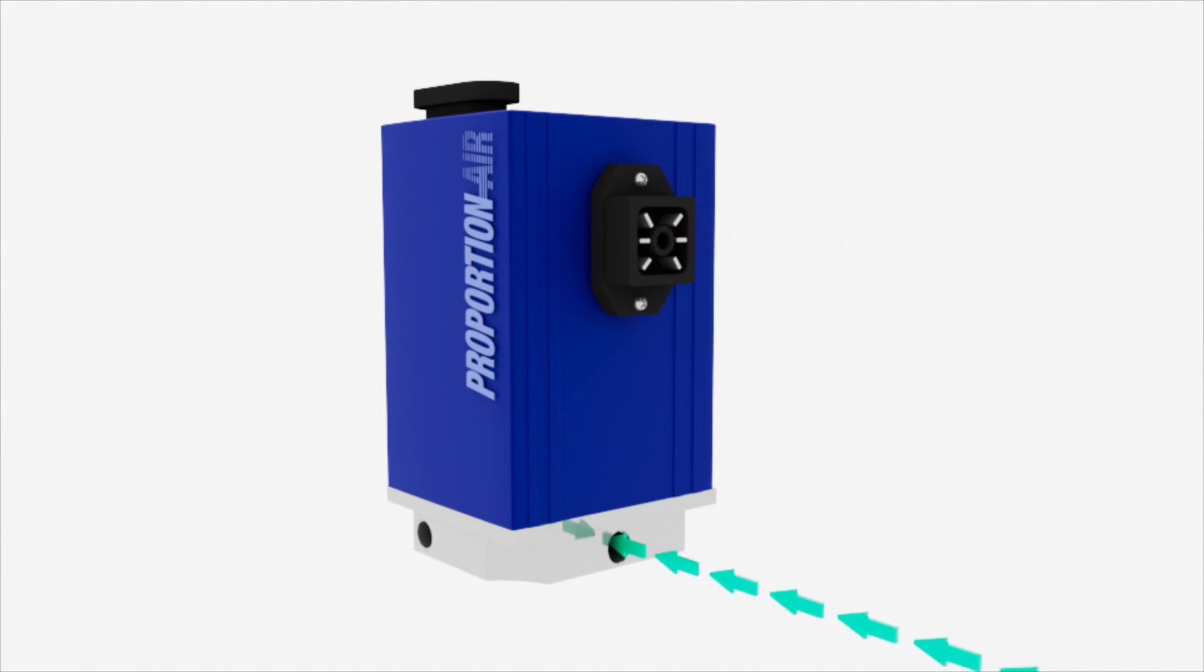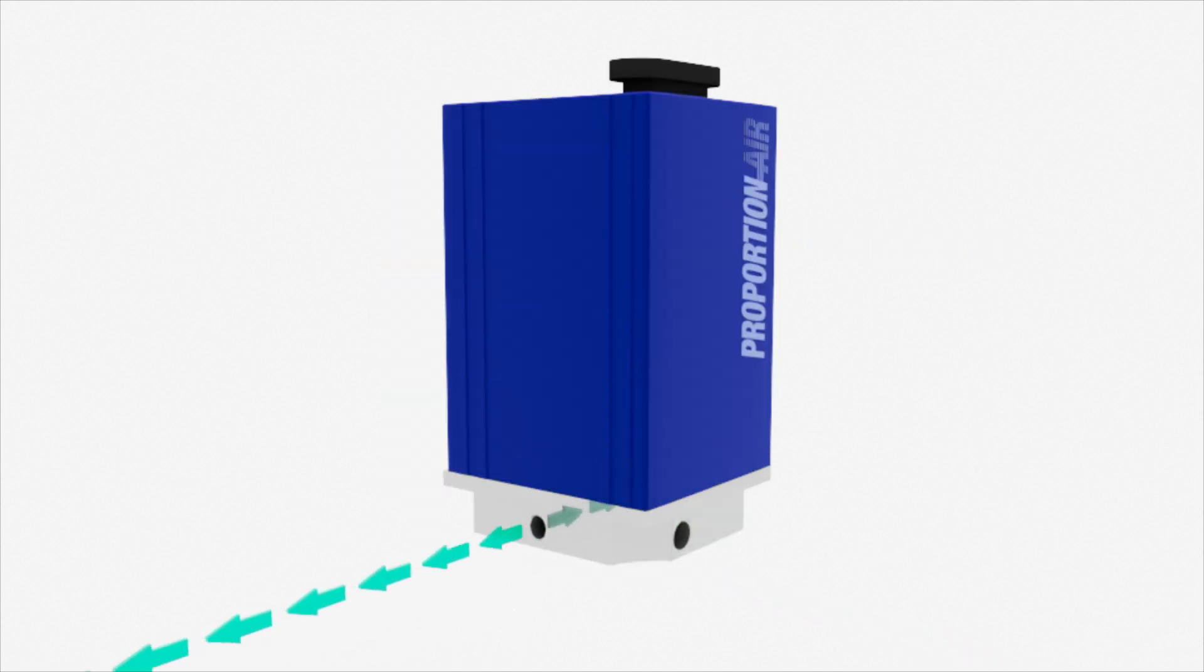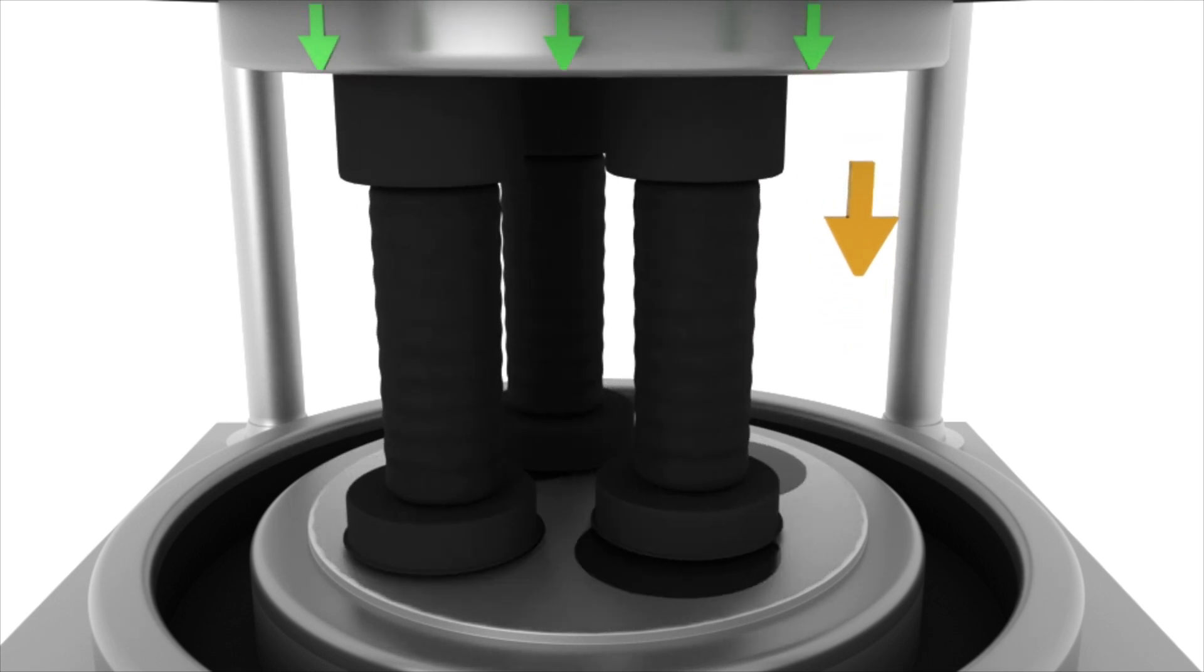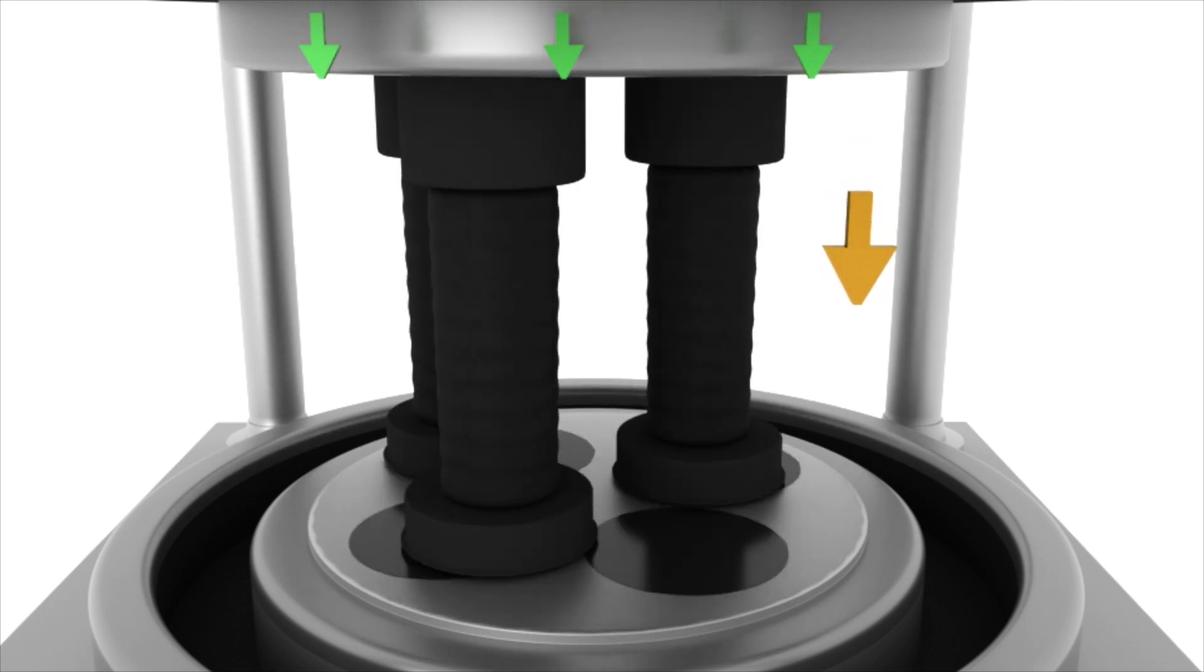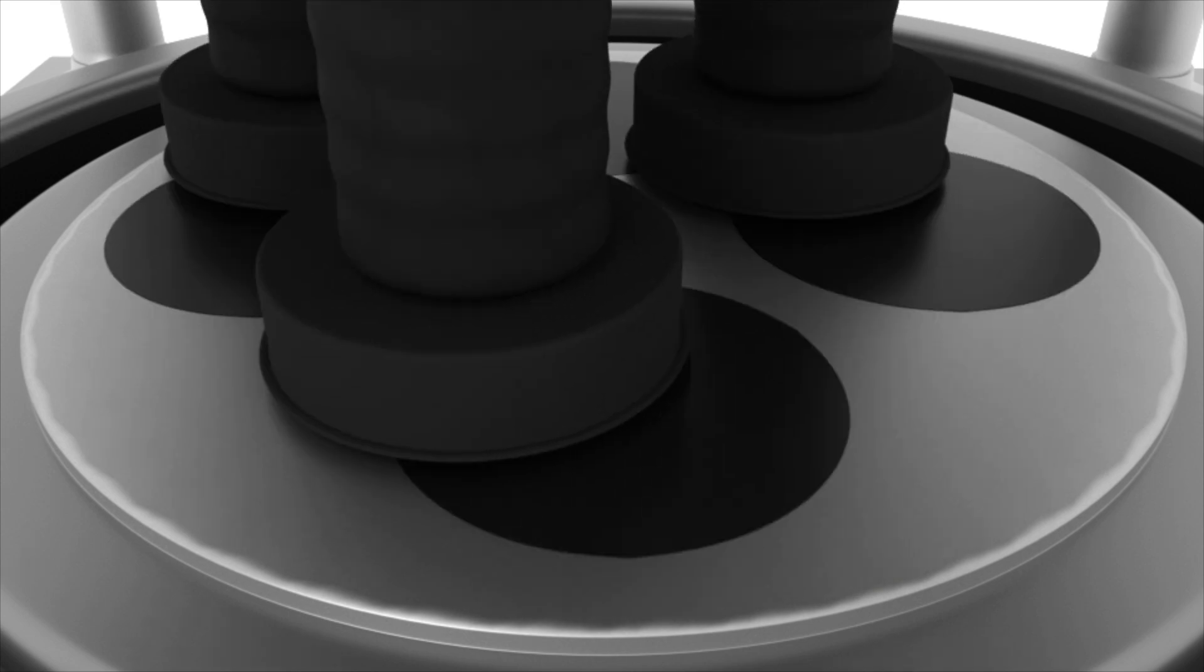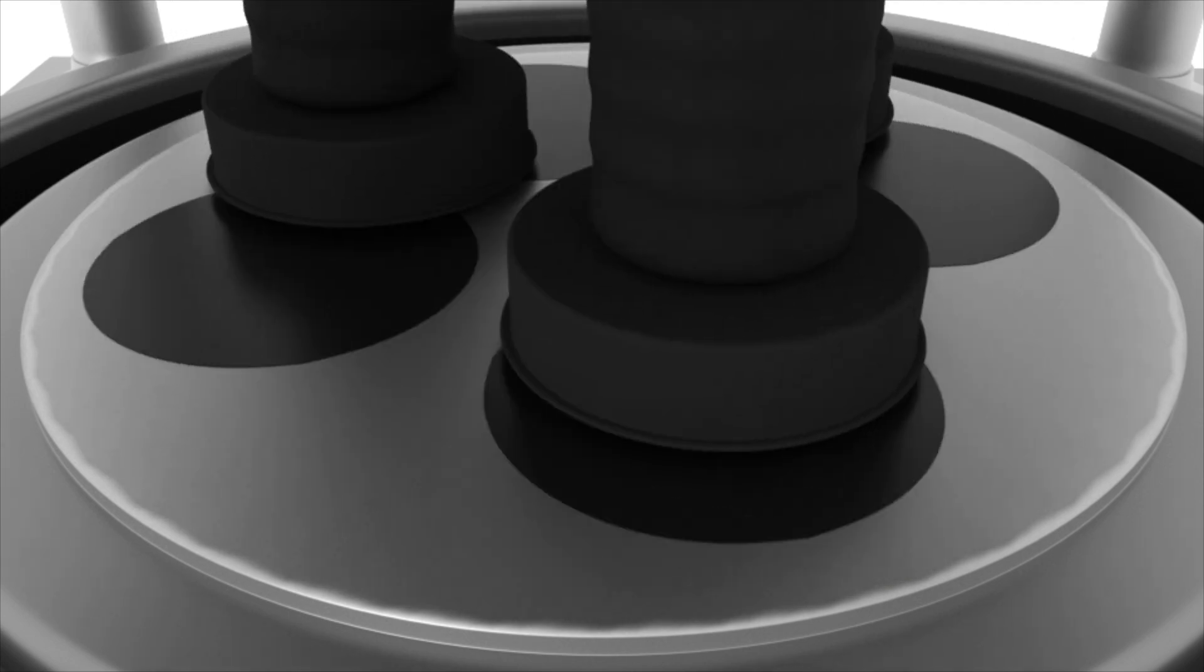Proportion Air is often used to control force in CMP machine pad polishing applications. Proportion Air's QB2 proportional valve uses closed-loop high accuracy control around the customer's load cell. This gives the pads repeatable and accurate force control when applied to the wafer as the load cell sends feedback.